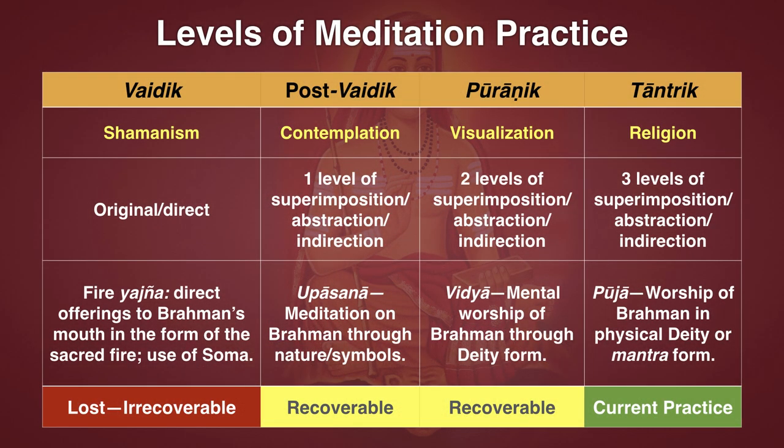It's very difficult to meditate on Brahman without qualities. Because of this, we have evolved over time several different layers of superimposition — or indirection, or abstraction — from the original object of meditation into so many symbolic forms, and this has become religion. What we're saying is: you don't have to be on the third-level symbolic form of religion. You can be on a first-level direct superimposition between Brahman and one of its qualities in nature, such as the sun or the sky.